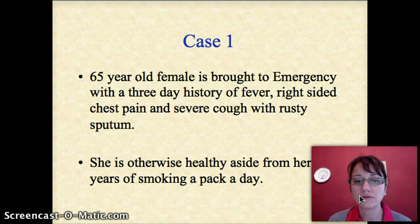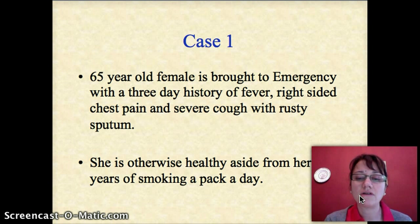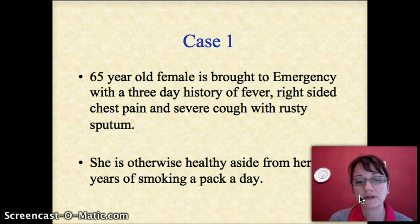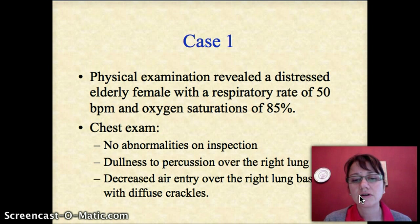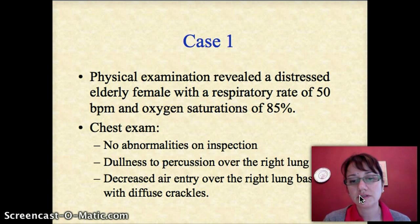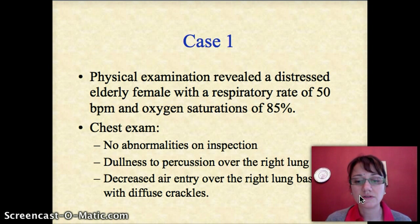Here's a clinical case: a 65-year-old woman comes to the emergency room with a three-day history of fever. She has pain on the right side of her chest — unlikely to be cardiac-related — and a severe cough. The sputum she's coughing up is rust-colored. She's otherwise healthy but has smoked a pack a day for 40 years — a 40-pack-year smoker. On physical examination she is quite distressed and having difficulty breathing; her respiratory rate is increased at 50, and oxygen saturations are quite low at about 85% — normal is usually more than 94%. Chest exam shows dullness to percussion over the right lung base, decreased air entry over the right lung base, and diffuse crackles on auscultation.